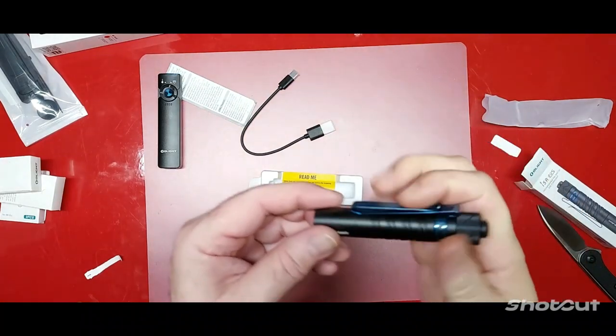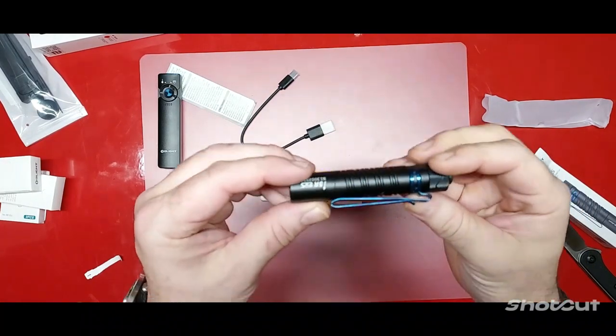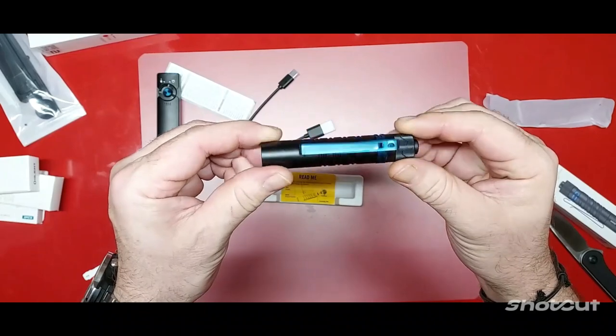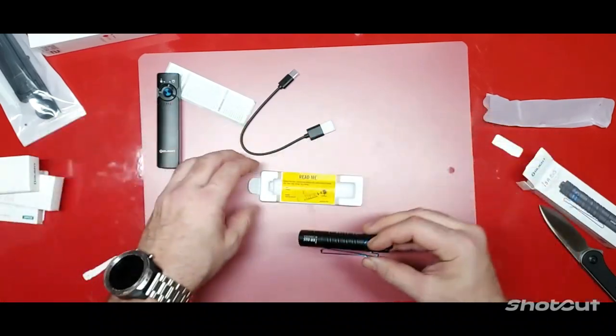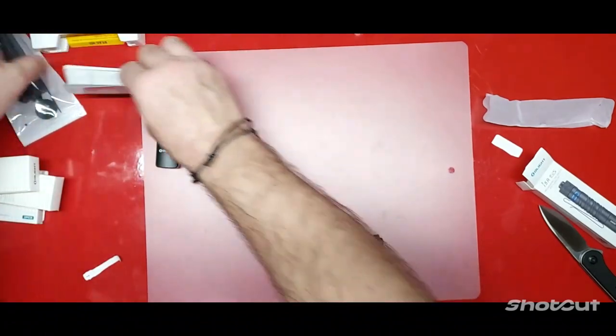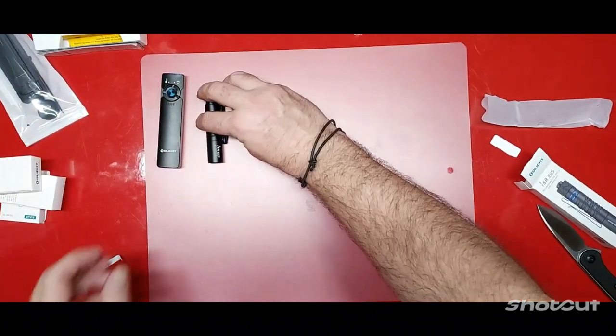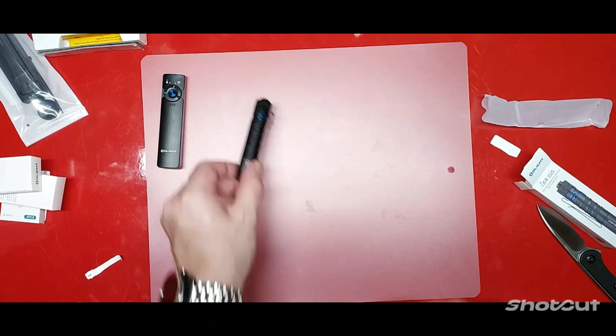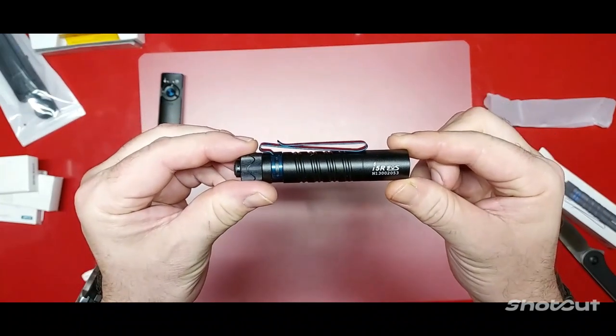Oh yeah, it's nice and bright. Like I said, I'll try to do a comparison of the flashlights against each other maybe at the end of the video. But you know, like I said, right now I'm just trying to get them all opened up. This packaging is going to get out of control really quick, I can tell. So that's the i5R EOS if you didn't catch that.